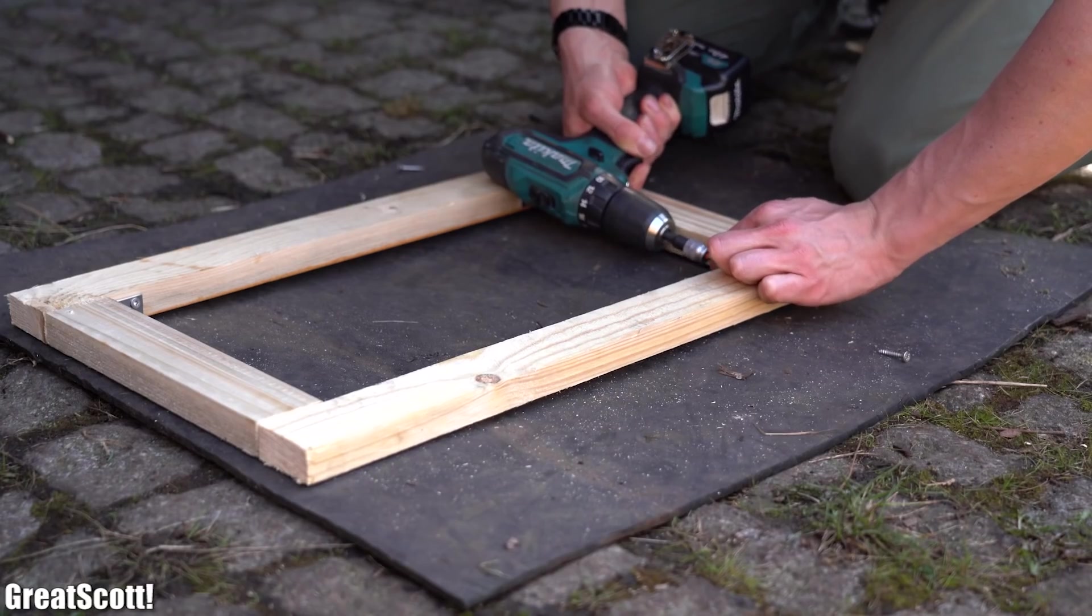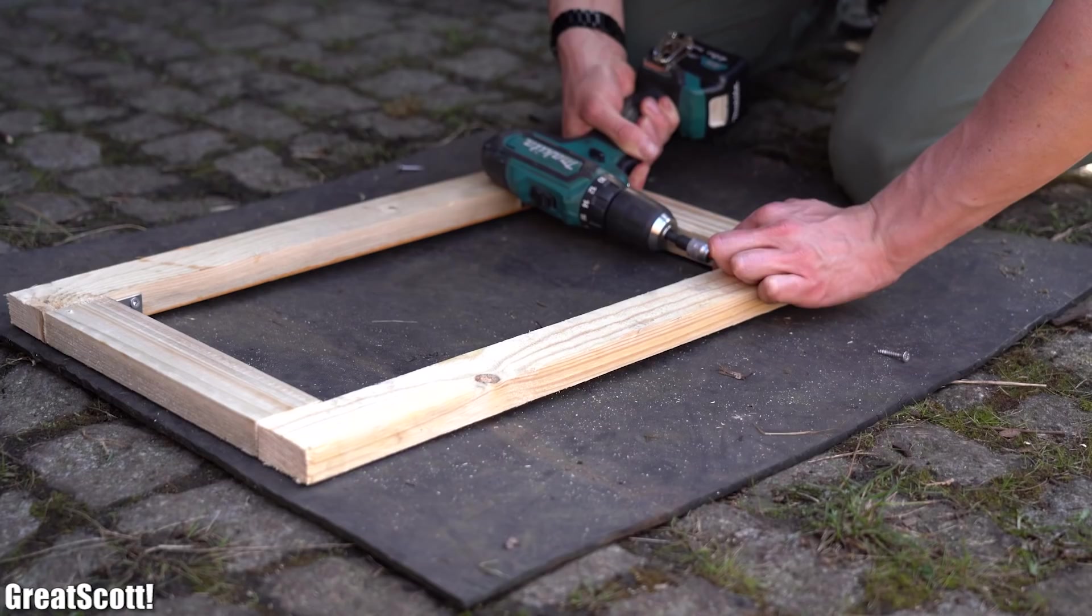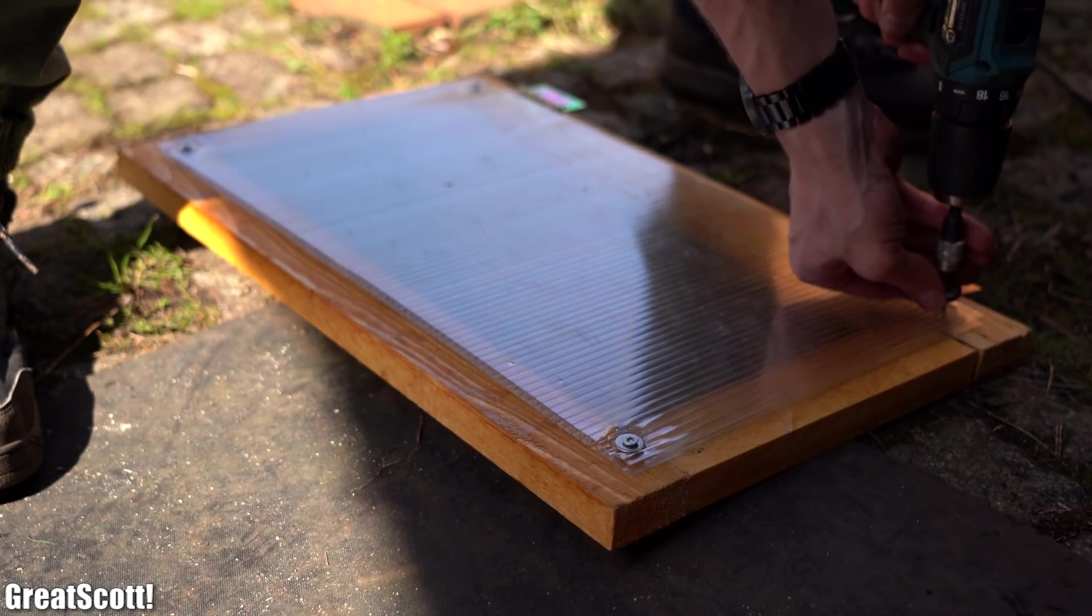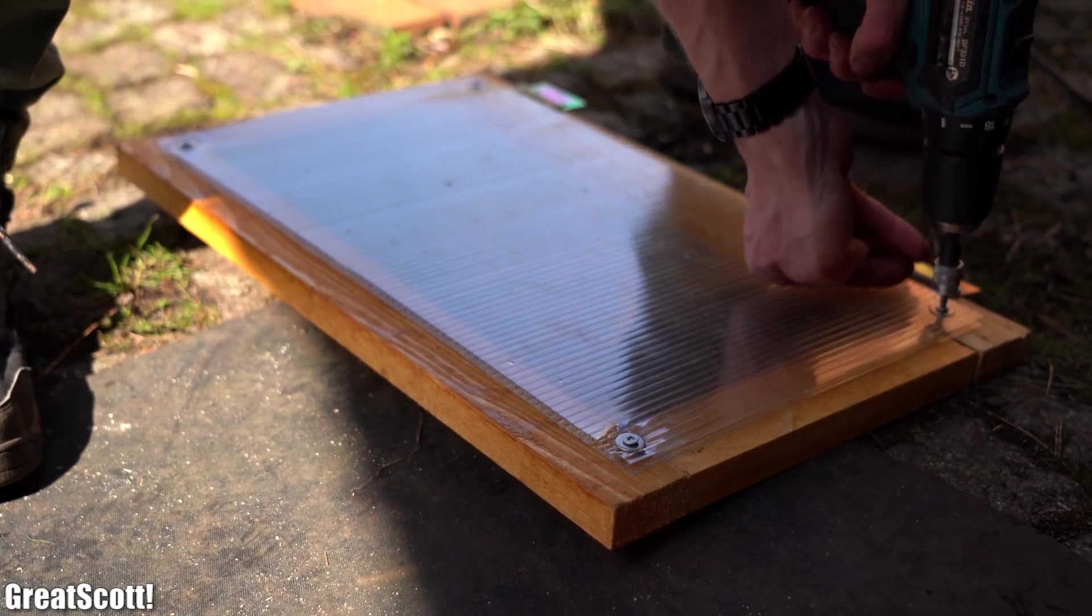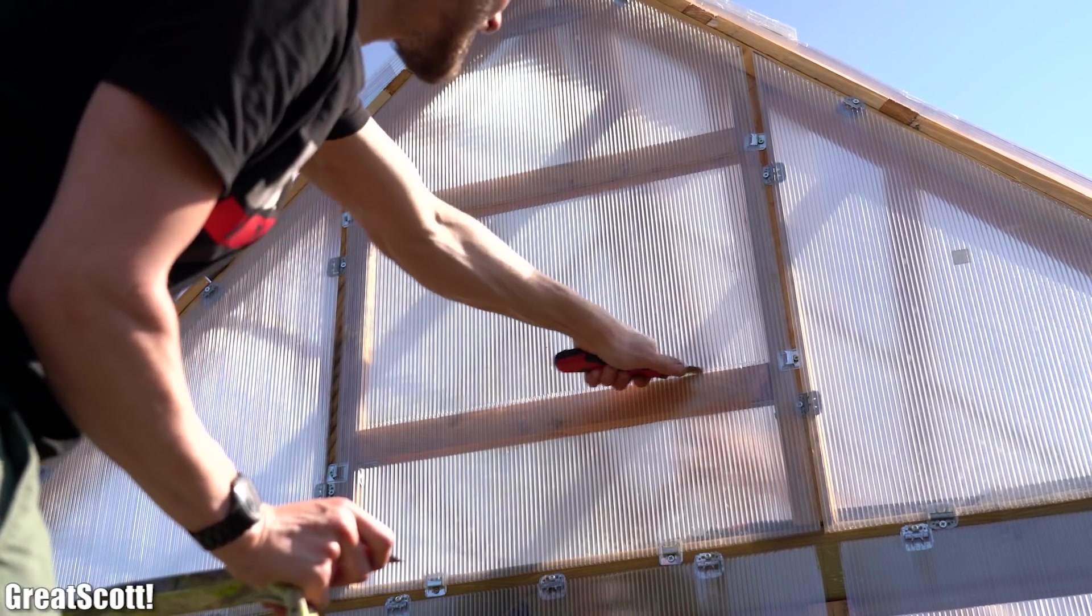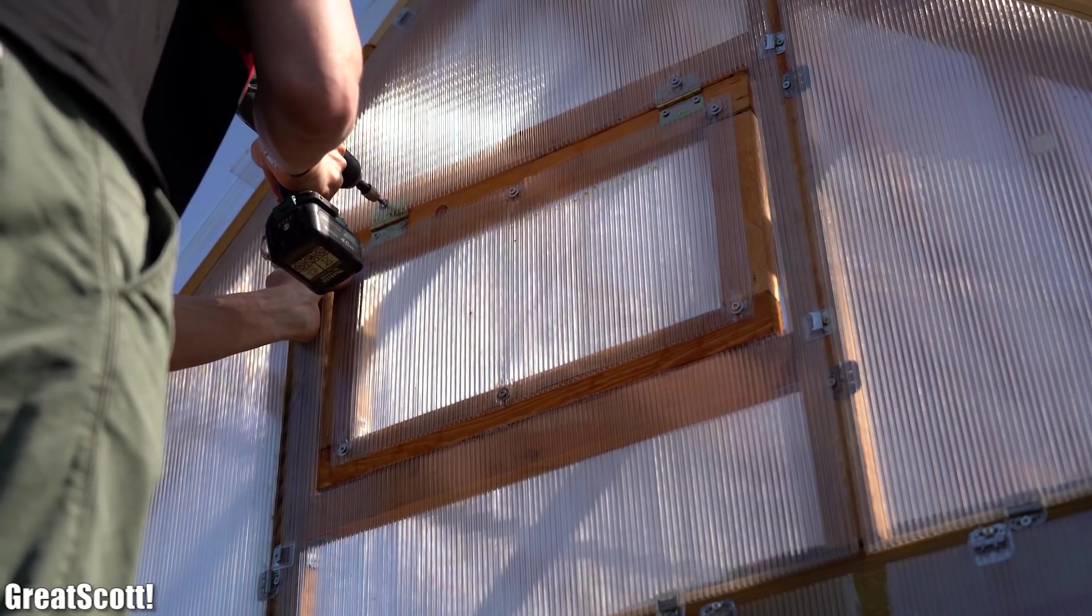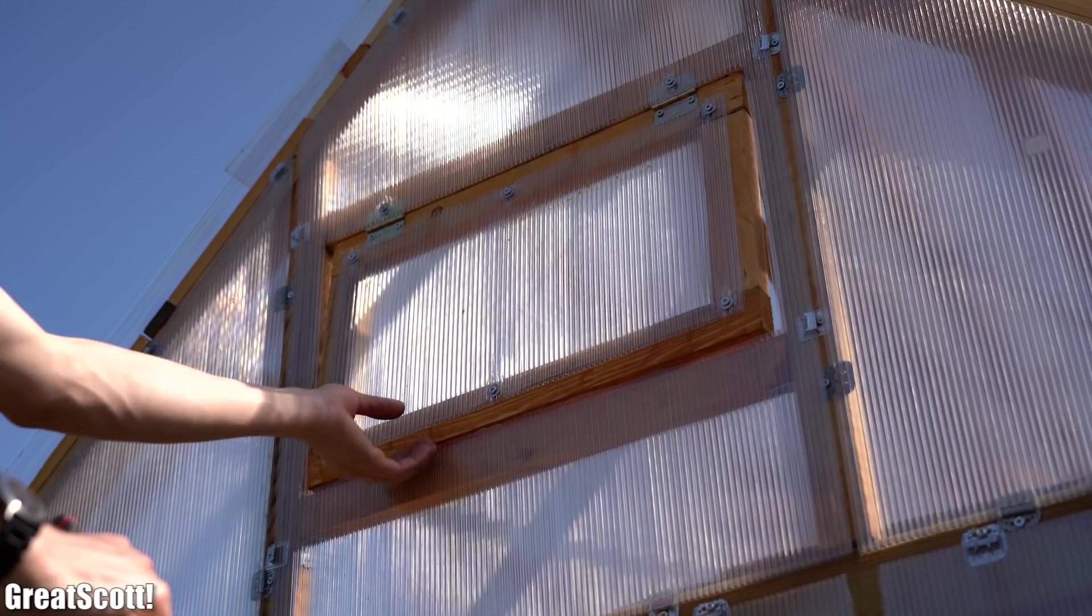You also took the liberty to create a simple wood square with the help of metal brackets, attached hinges to it as well as a twin wall sheet piece and cut out a rectangle out of your greenhouse's twin wall sheets in order to attach that wood square there to create a proper window.